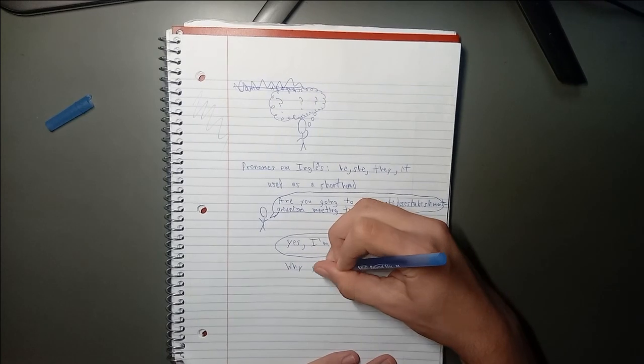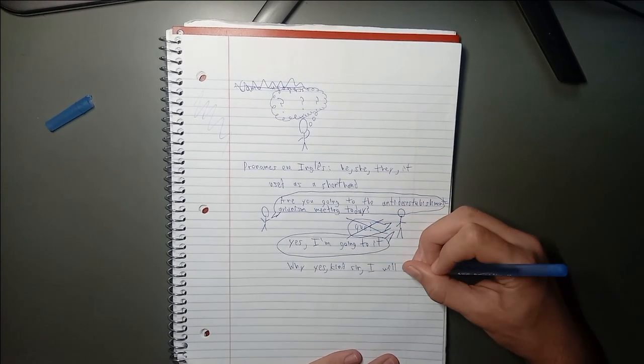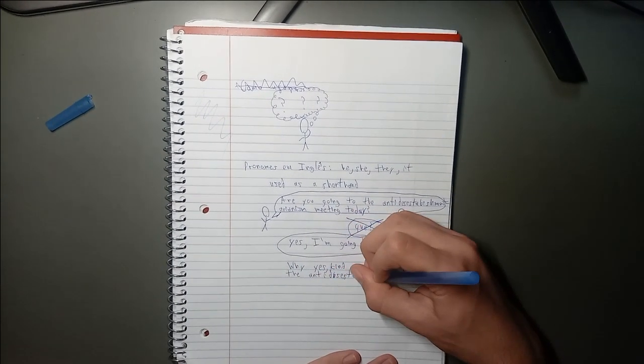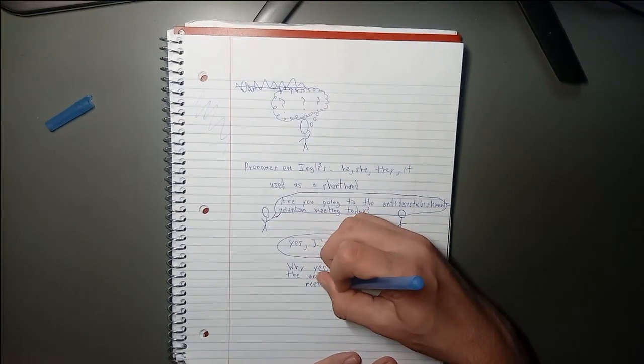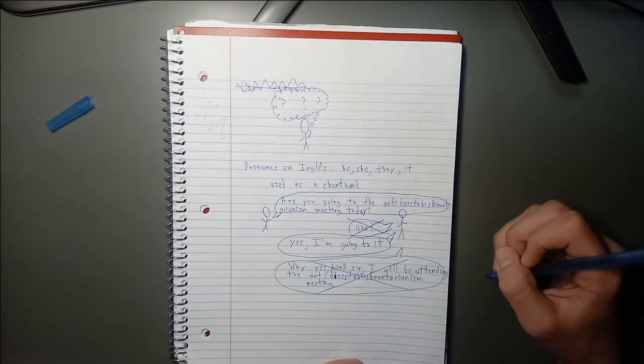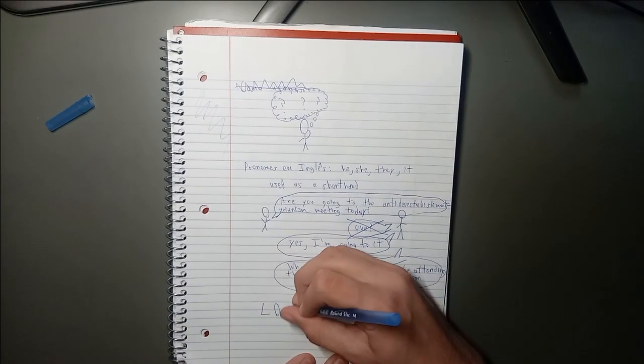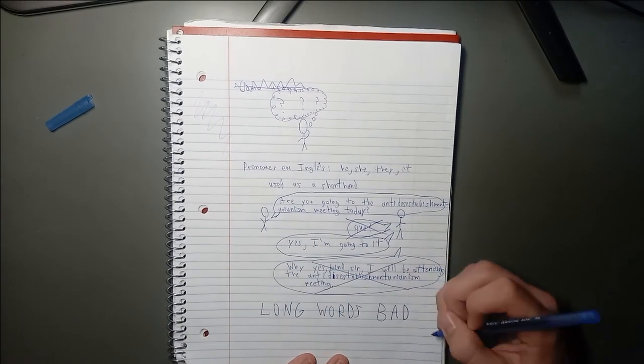Instead of saying, why, yes, kind sir, I will be attending the anti-disestablishmentarianism meeting. It makes sense to use it instead of anti-disestablishmentarianism, because it just takes longer to say anti-disestablishmentarianism. Anti-disestablishmentarianism.